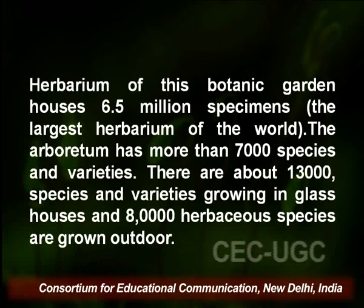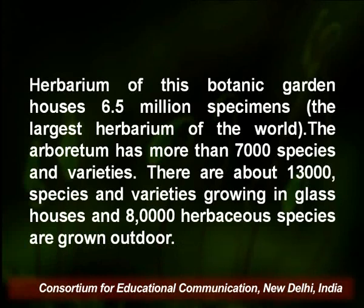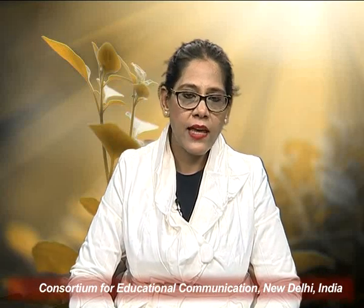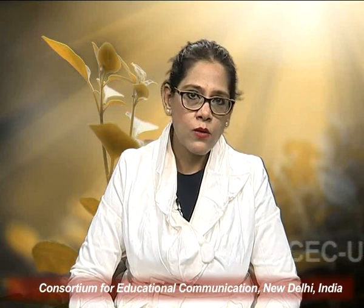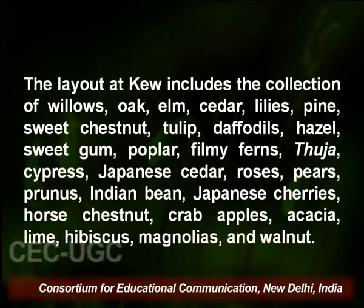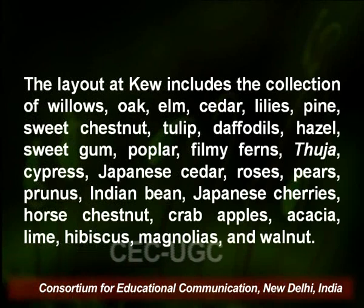Around 80,000 herbarium species are growing in the outdoor garden. The layout of Kew includes a collection of many plants such as willows, oak, elm, cedar, lilies, Japanese cedar, roses, pears, crab apples, acacia, etc.